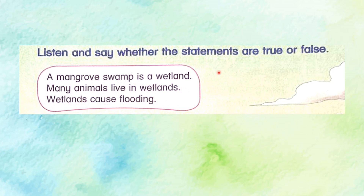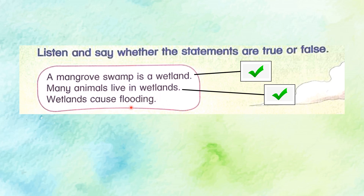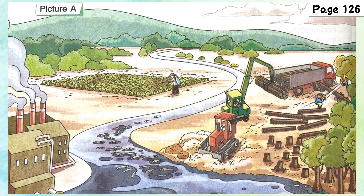Let's find out whether the statements are true or false. First: a mangrove swamp is a wetland — true. Many animals live in wetlands — true. Wetlands cause flooding — that's false, because wetlands prevent flooding.